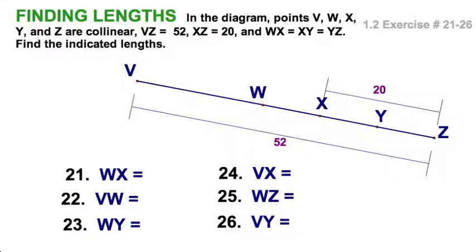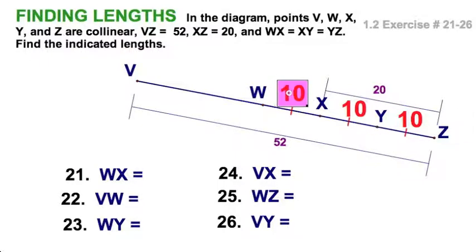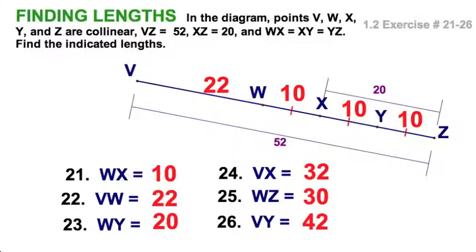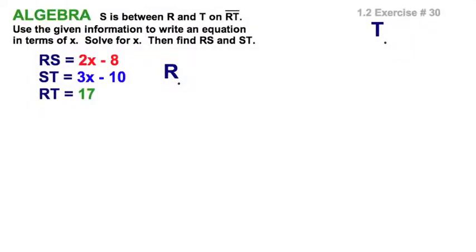Here's an interesting exercise with five collinear points. The overall distance VZ is 52 and XZ is 20. We're also told that the segments are divided equally: VX equals XY equals YZ. Put tick marks in your drawing to show those segments are congruent. Since XZ of 20 is split into two tens, and all three segments are equal, each must be 10. That accounts for 30, so the remaining portion is 22. Add the various segments accordingly.